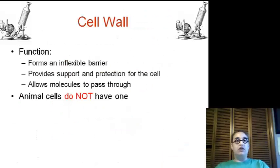So first, we have a cell wall, which is going to be found in plants. It has an inflexible barrier, providing structure, support, protection, and it allows molecules to pass through. Again, not in animals.